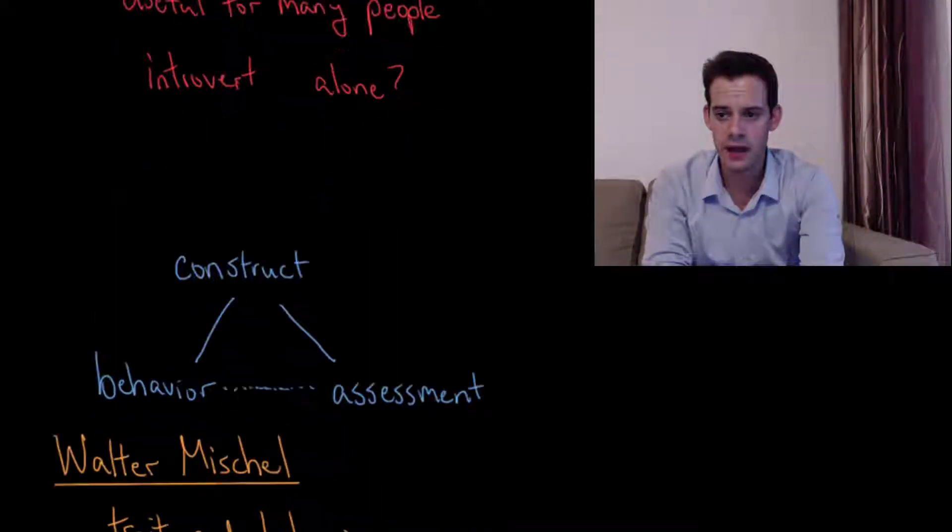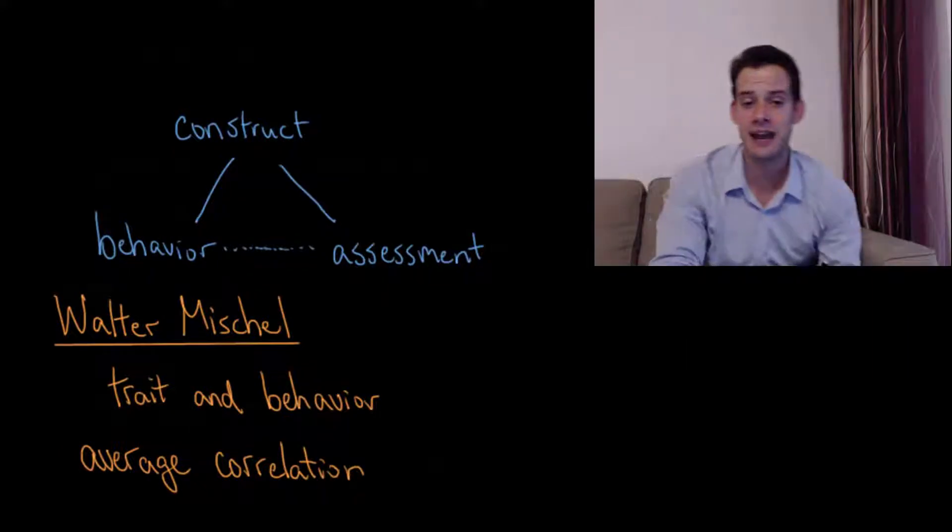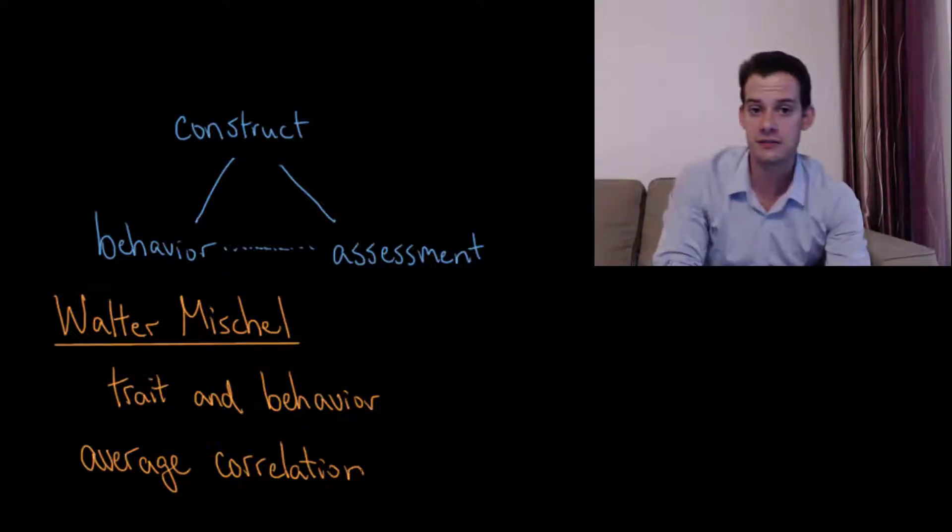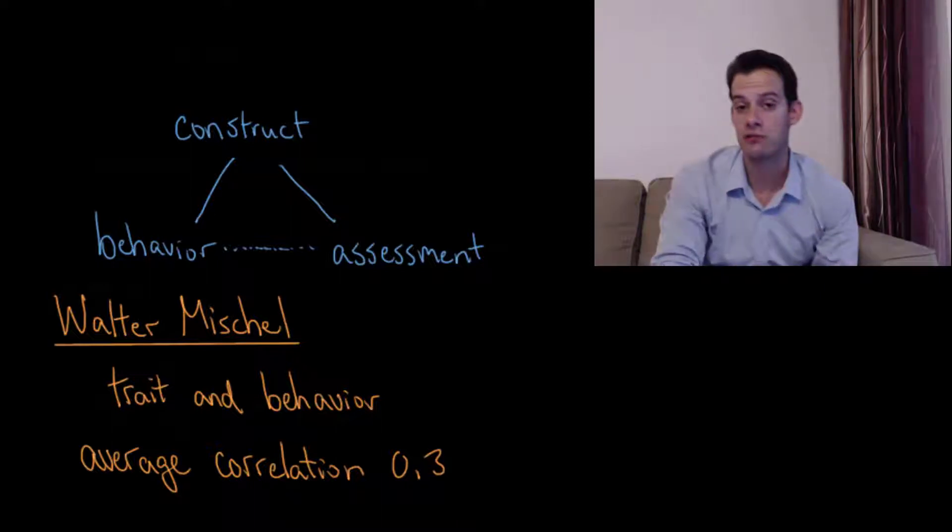And this brings us to some work by Walter Mischel. In 1968, he published a book called Personality and Assessment. And he looked at the relationship between traits and behaviors. And when looking at single traits and specific behaviors, he found an average correlation of about 0.3.